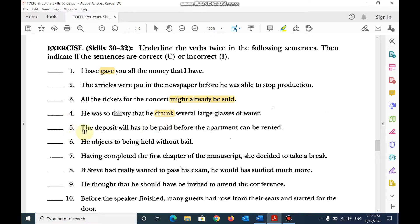Number 5, the deposit will has, will have, incorrect. Number 6, he objects to being held without bail. Objects, present simple, followed by preposition to, and then a gerund, correct?